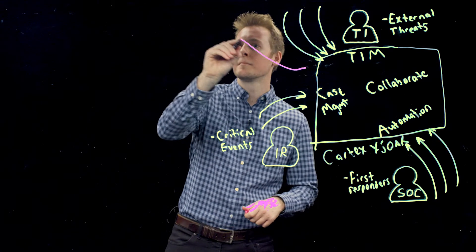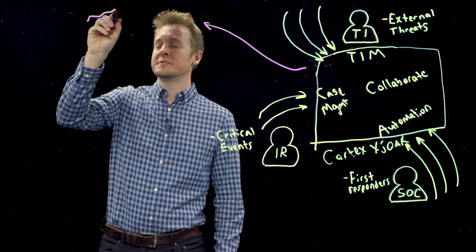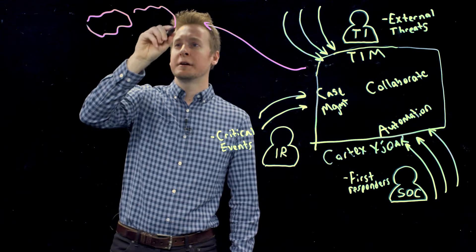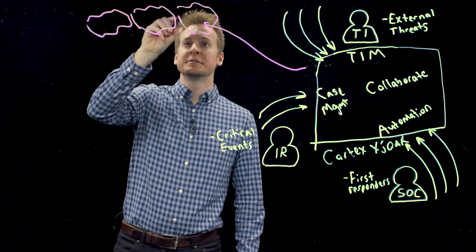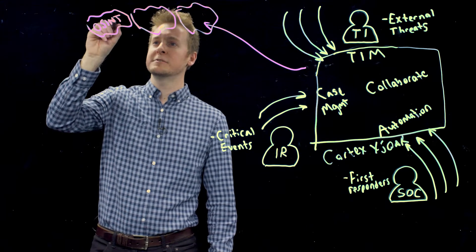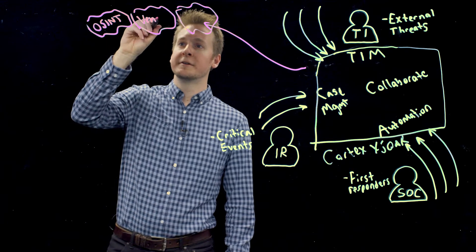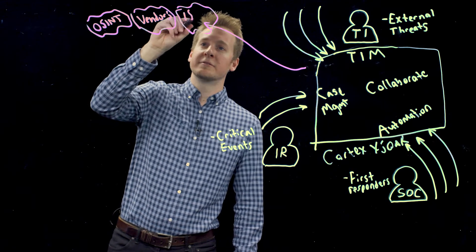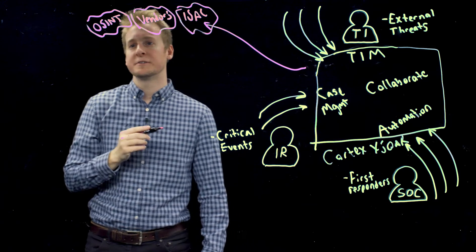So now let's take a closer look at the threat intelligence management capabilities within Cortex XSOAR. What you'll find is your threat intelligence program is collecting intelligence feeds from many different sources, including open source threat intelligence from third-party vendors and from ISACs or information sharing and analysis centers.